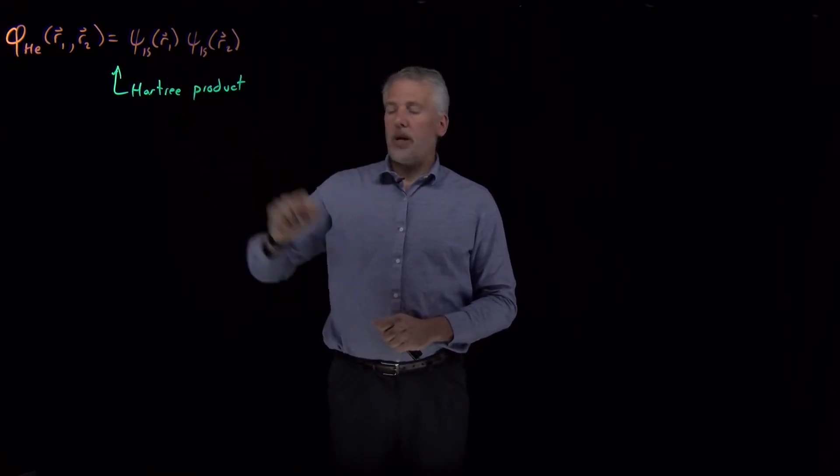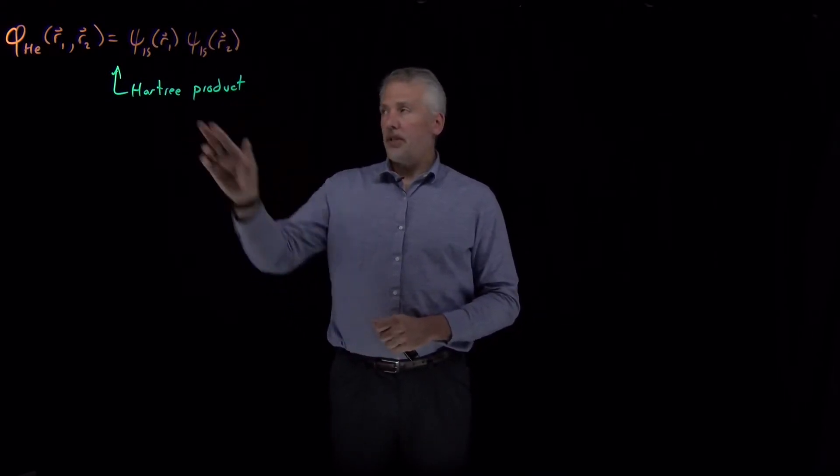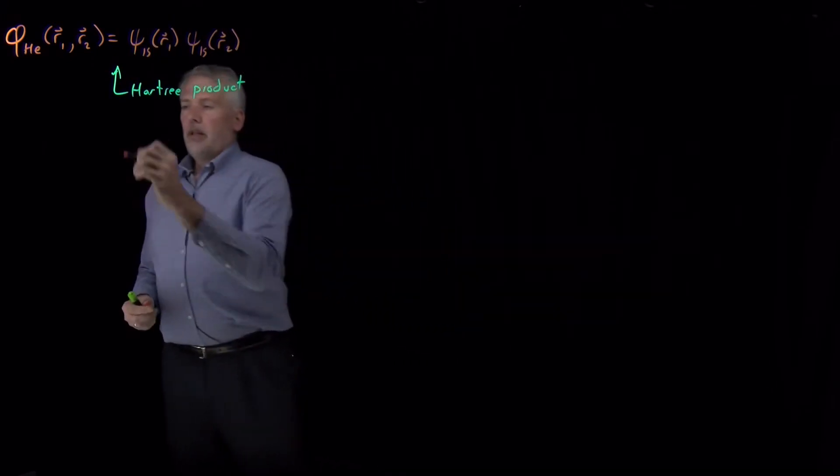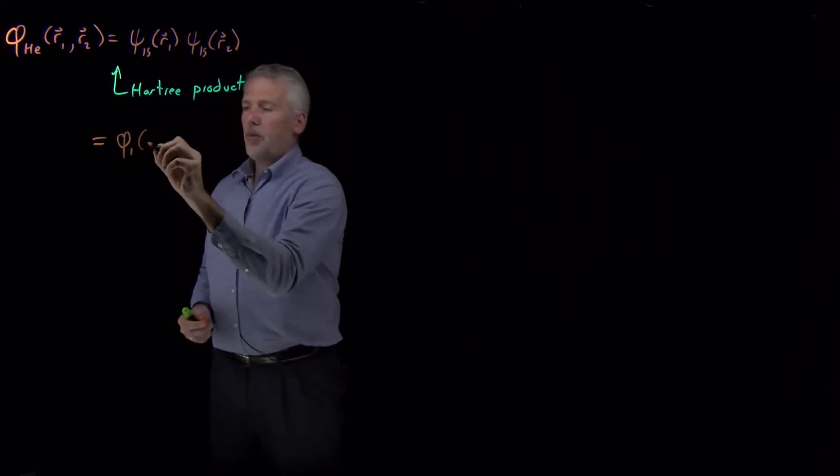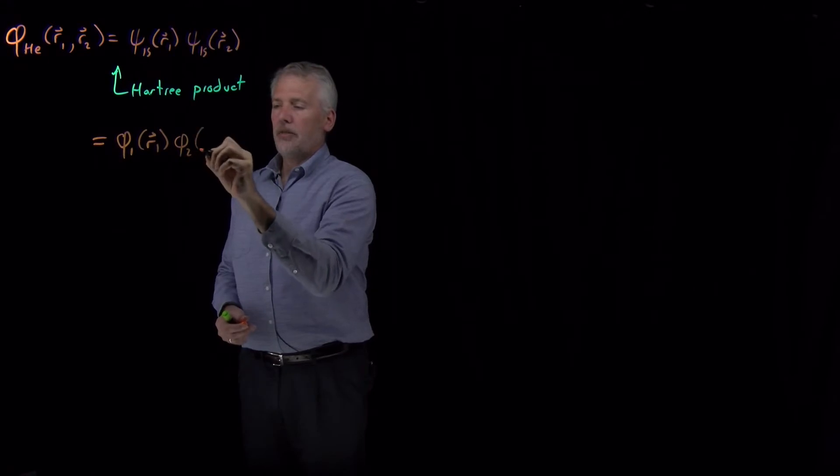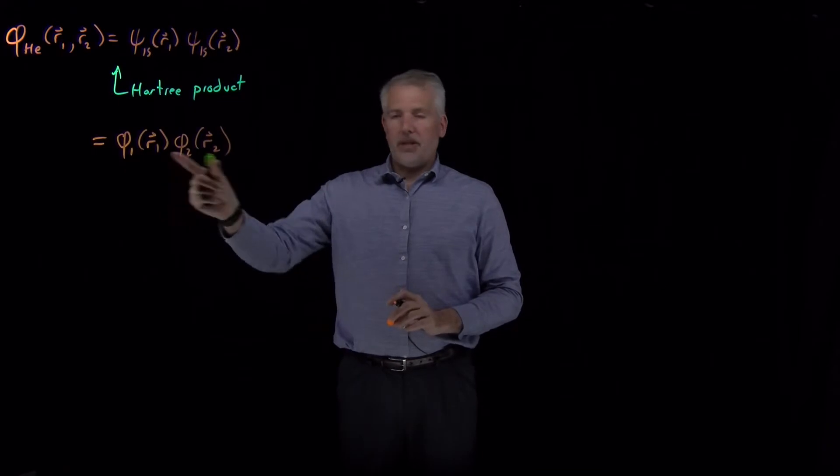It turns out, though, that we're not restricted to just using the 1s wave function when we take our Hartree product. The 1s wave function, remember, is one of the solutions of the Schrödinger equation for the hydrogen atom. We just used it because it was a reasonable-looking spherical orbital that we can put electrons into, but more generally, we're not restricted to just using 1s. We can say, let's make up any one-electron function we want for electron one and any other function we want for electron two. Maybe they could be the same, or maybe they're different.